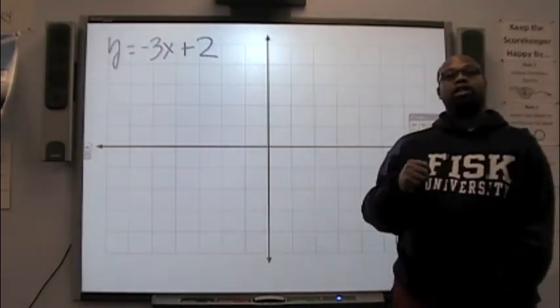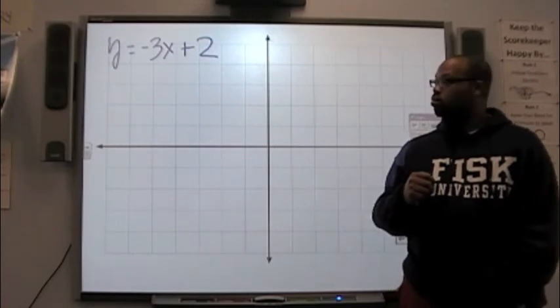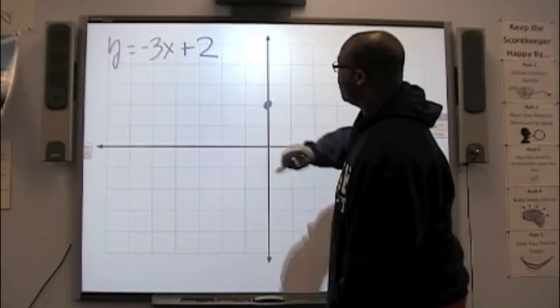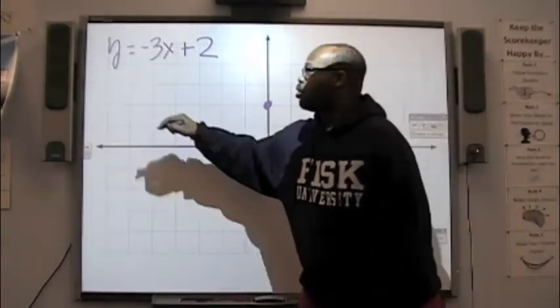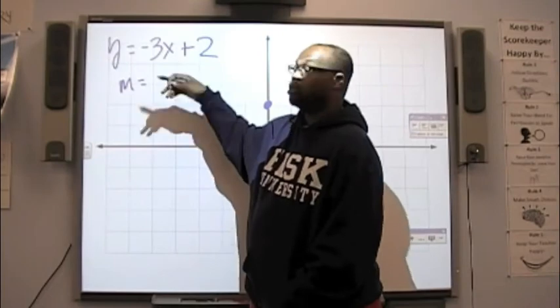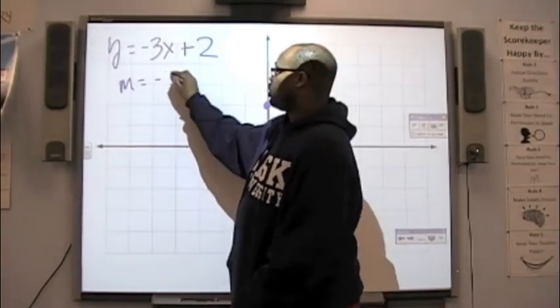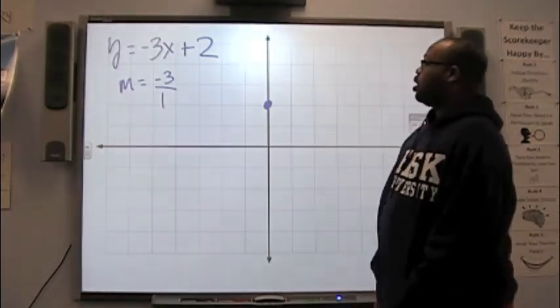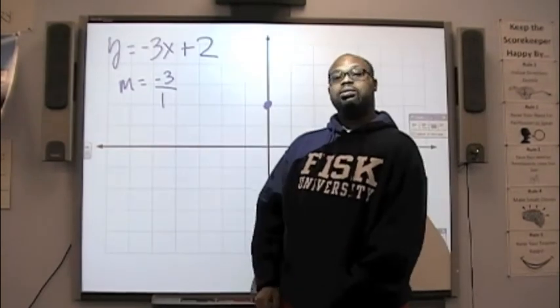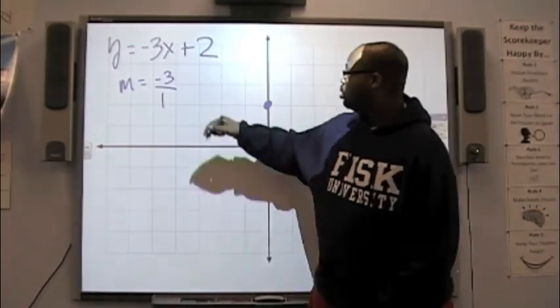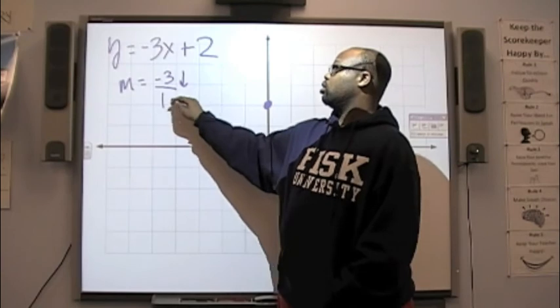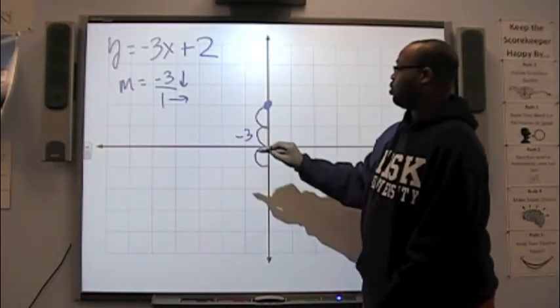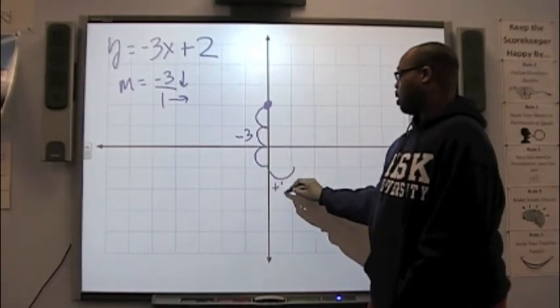All right. Where do I start with this graph? 2. All right. Negative 3 can be rewritten as what? In order to use the slope. Negative 3 over 1. Any number can be placed over 1. So, will I go down three spaces or up three spaces? Down. And the 1 will go to the right. So, 1, 2, 3 down. That's my negative 3. 1 to the right. That's my positive 1.